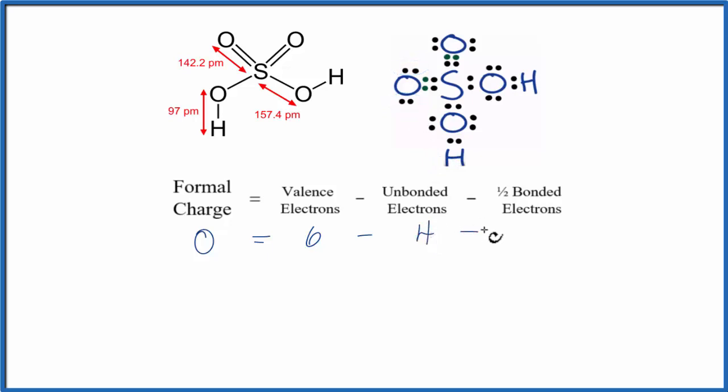And we'll subtract one half of the bonded valence electrons. These are the electrons between atoms. We have four of them in this double bond. So four there. Six minus four, that's two. Minus two, that equals zero.